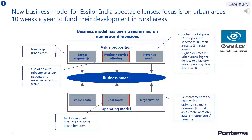Let's look at an example. Indian spectacle lens maker Essilor has transformed its business model on numerous dimensions. It has adapted its value proposition by targeting new customers in urban areas, changing its service offering, and charging higher prices in urban areas. It has also adapted its operating model by focusing on cost efficiencies and making changes to its organizational design.